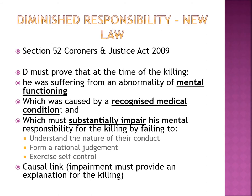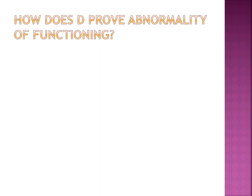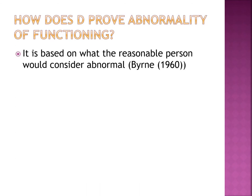Going through each element, the one students probably struggle with most is how to prove a defendant was suffering from an abnormality of mental functioning. Essentially, it's based on what a reasonable person would consider abnormal. If you believe the way a defendant has acted is abnormal — not what we would call everyday normality — then you can satisfy this element. For the most part, murder is going to be abnormal; it's not something we would expect people to do.